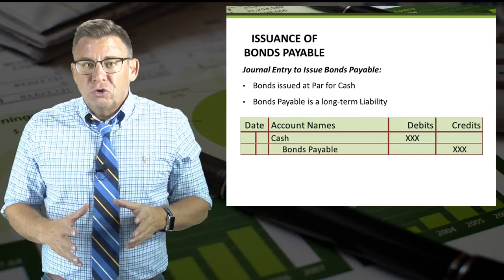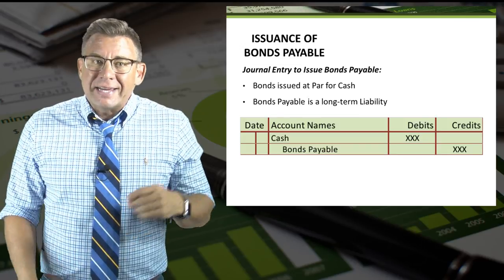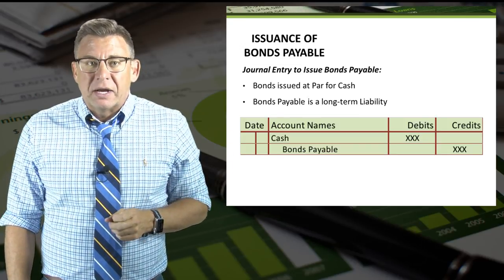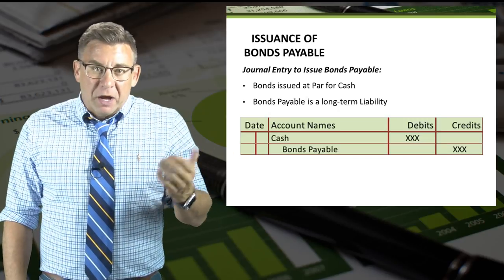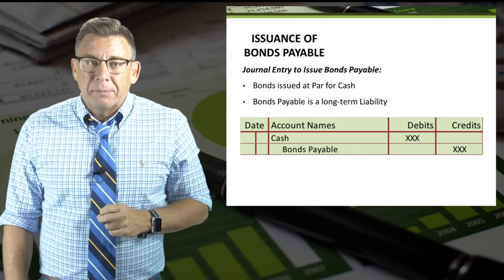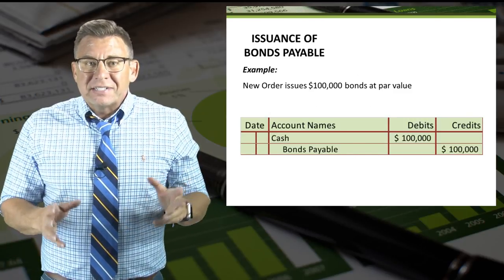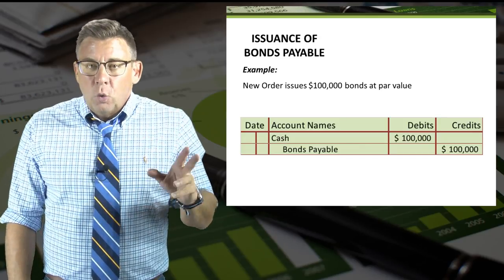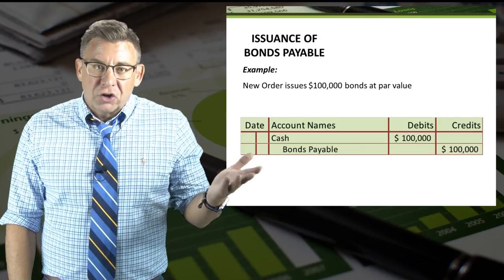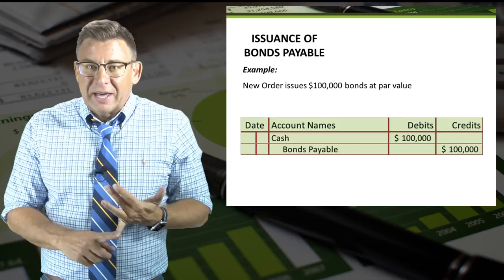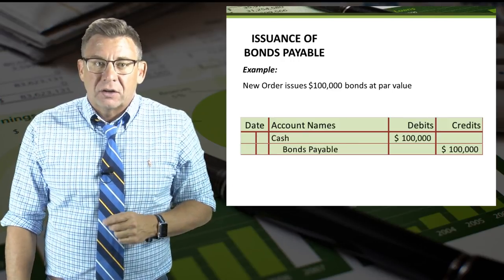The journal entry to issue bonds at par is a debit to cash and a credit to bonds payable. A bonds payable account is a long-term liability. In this example, New Order issues $100,000 bonds at par, so the journal entry is a debit to cash and a credit to bonds payable for $100,000.